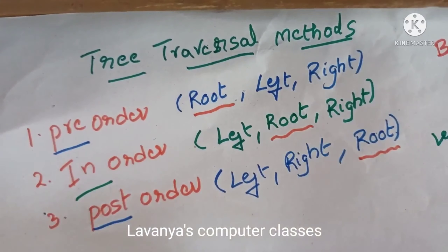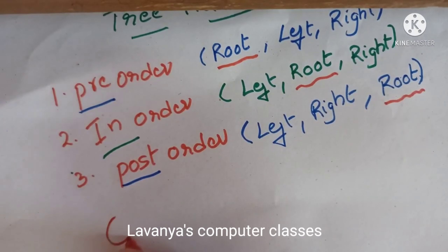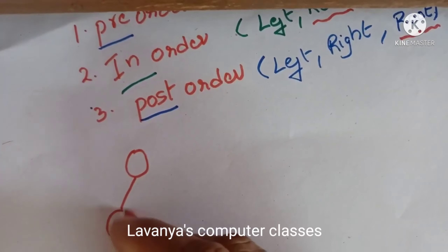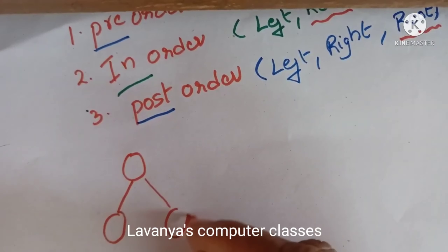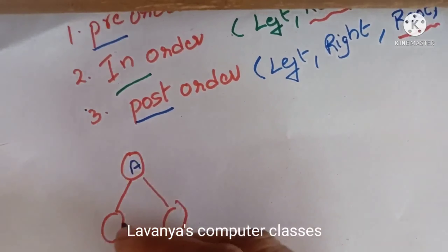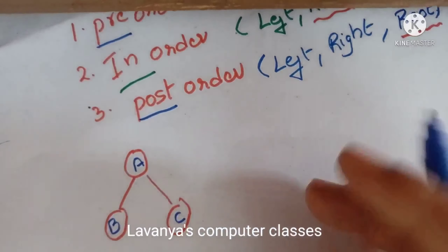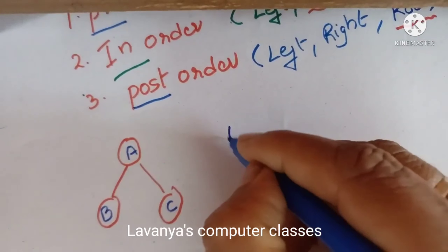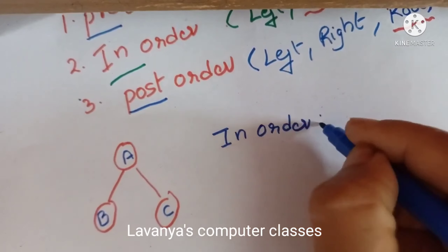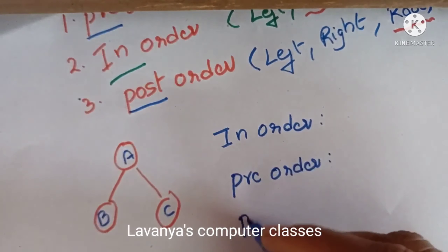Now I will explain a simple example for tree traversal. I will take a small tree with only three nodes: root node A, with left child B and right child C. For this simple tree I will demonstrate in-order, pre-order, and post-order traversal.